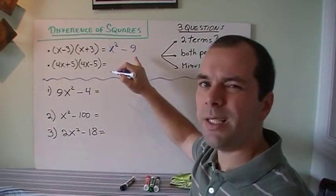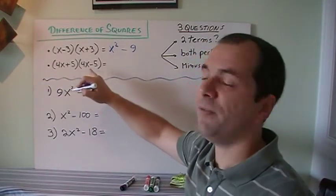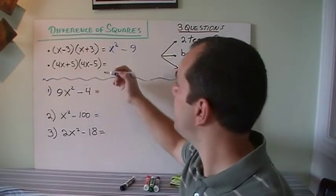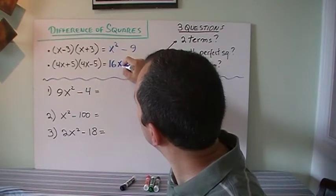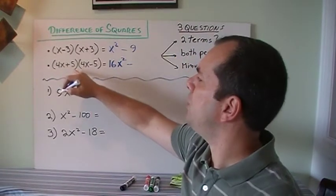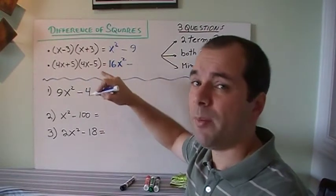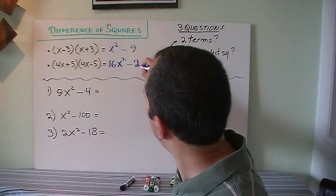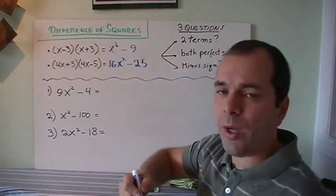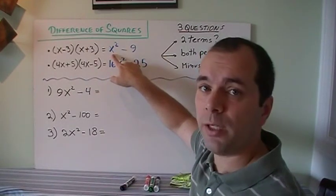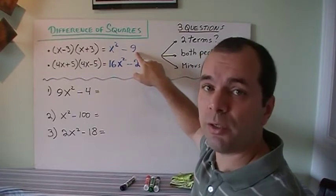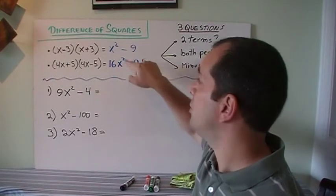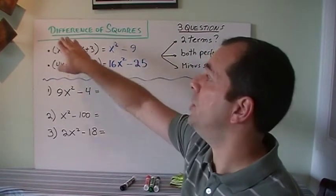This ends up being just two terms. Let's check the next one: (4x+5)(4x-5). Same thing — 4x times 4x gives 16x squared. Then 20x minus 20x, so the middle term disappears again. And 5 times minus 5 is minus 25. This is why it's called a difference of squares — each term is a perfect square (x², 3², (4x)², 5²) and you're subtracting them.